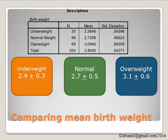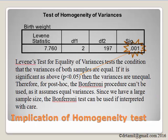Looking at the test of homogeneity of variances, the test is significant — the p-value is 0.001, which is less than 0.05. So the variances are unequal. Therefore, for post-hoc, you cannot use the Bonferroni procedure because it assumes equal variances. If you still insist on using Bonferroni, you can for large datasets, but you must interpret the results with care.